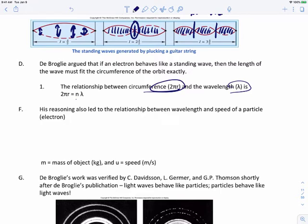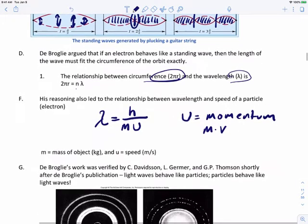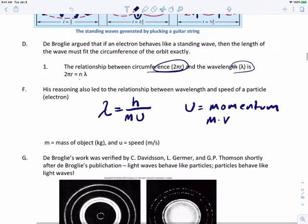His reasoning led to the relationship between wavelength and the speed of a particle. He said that the wavelength is going to be equal to Planck's constant h divided by m times u, where u is called momentum. The way we calculate momentum in physics is that we take the mass and multiply it by the velocity. It's like saying m squared v.